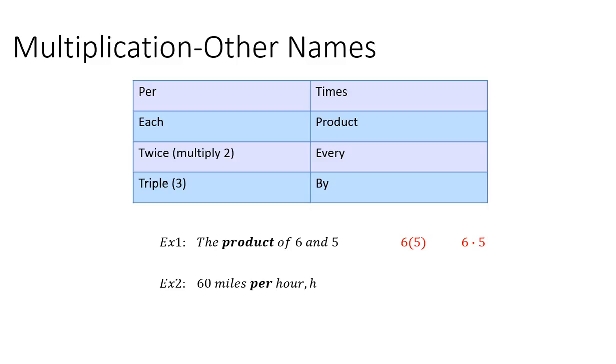Example 2, 60 miles per hour, which would be represented by the variable H in this example. So what it's asking is 60 times H or 60H. You don't have to put parentheses when you're multiplying by a variable like that.